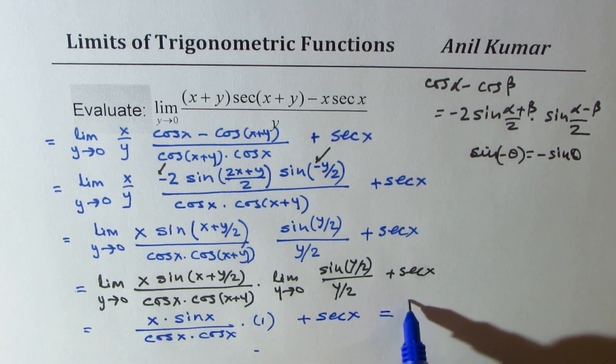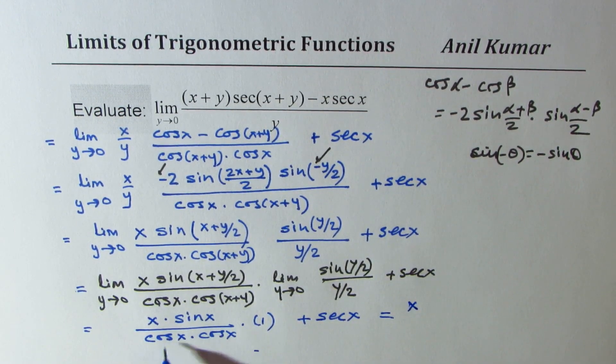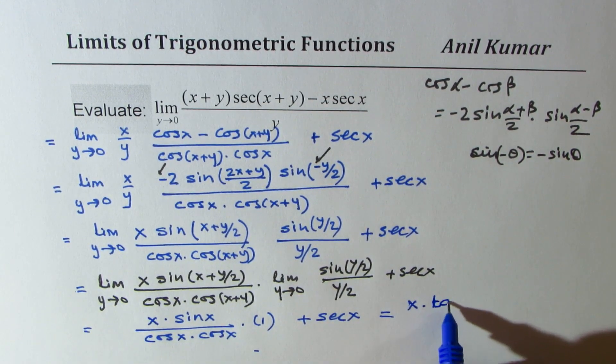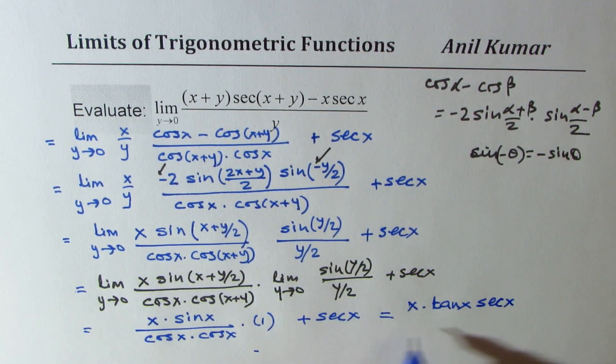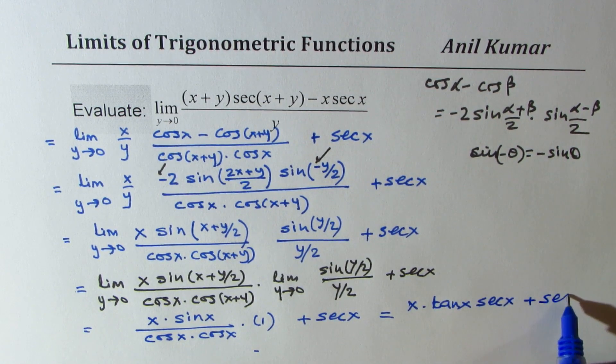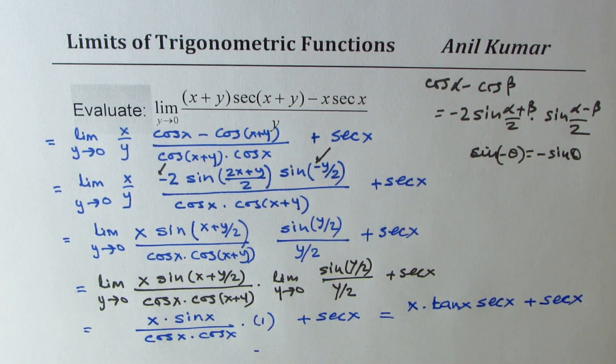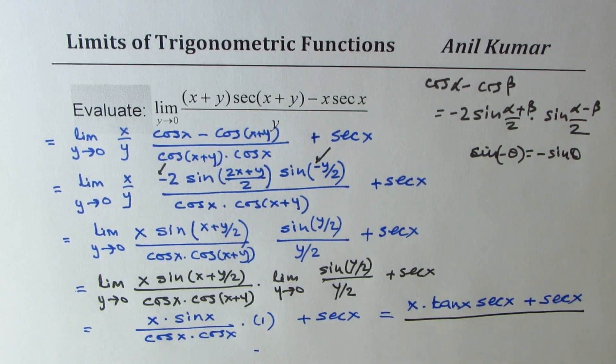So that gives you the result x sine x over cos x is tan x, and 1 over cos x is secant x plus secant x. So the limit of this function is x tan x secant x plus secant x.